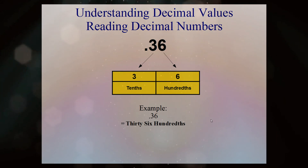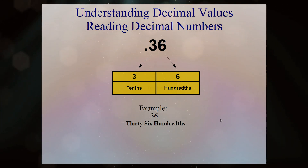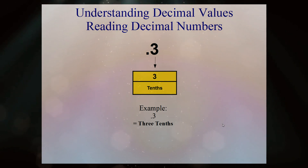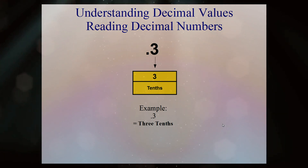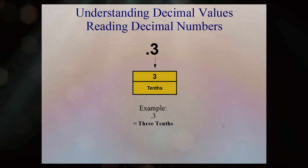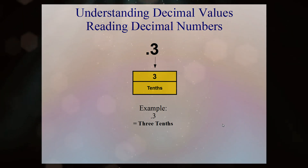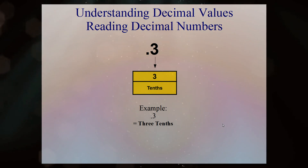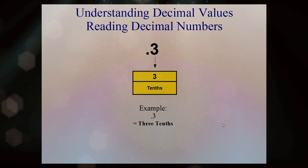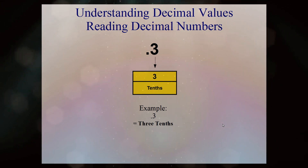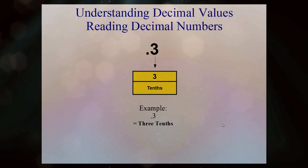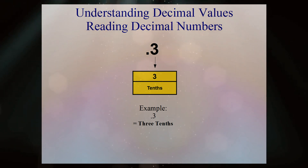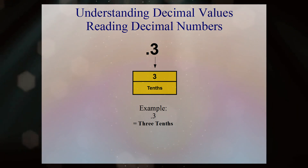Let's reduce it down even further. We're left with point three, and our first digit to the right would be our tenths spot, so this is three tenths. Now let's go ahead and mix this up with a whole number and see what happens.